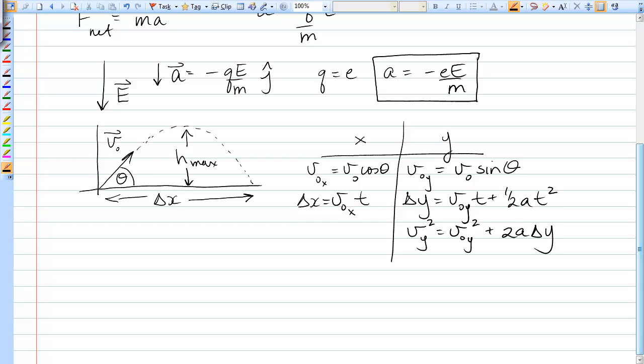So let's first find the maximum height. Find H max. We know up at the top of its flight there that the Y velocity, VY, is equal to zero. VX is not equal to zero, it's still equal to V0 cos theta because it never changes. But VY is zero, so using the third equation in the Y column, we have that zero is equal to V0Y squared plus 2A delta Y.